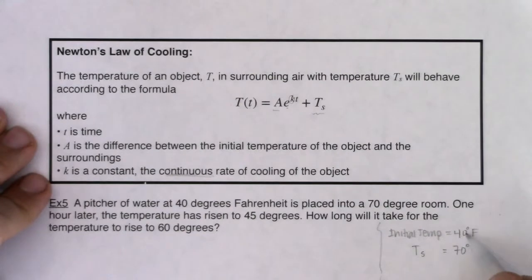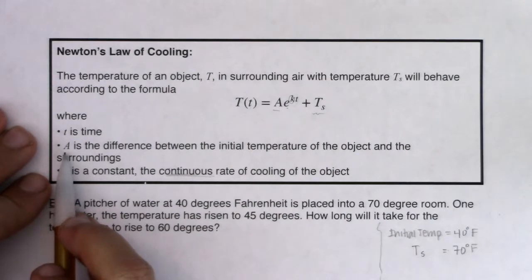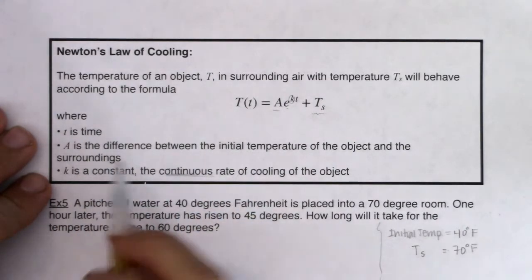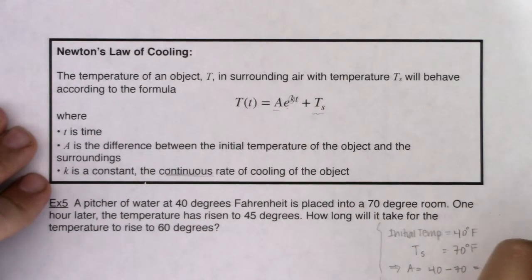But as soon as you know your initial temperature of your object, in this case the pitcher of water, and you know the surrounding temperatures, you can find A. So A is the difference between your initial temp and the surrounding. So because of these two, I know A has to equal, and go in this order, 40 minus 70. So A is negative 30 degrees Fahrenheit.